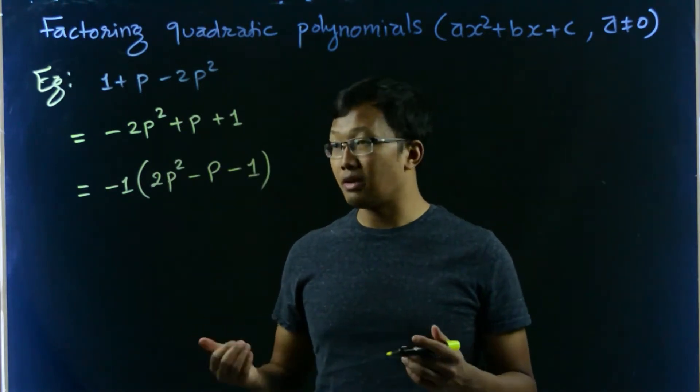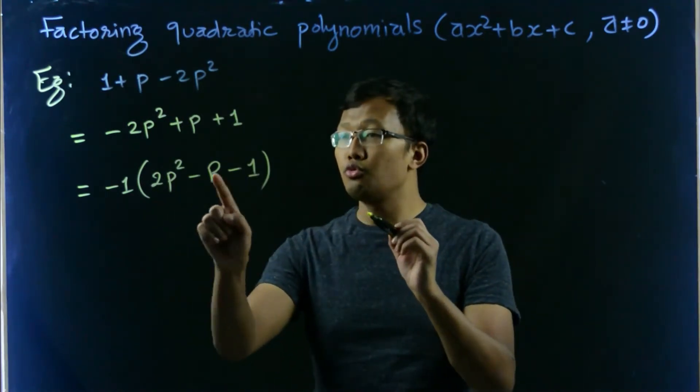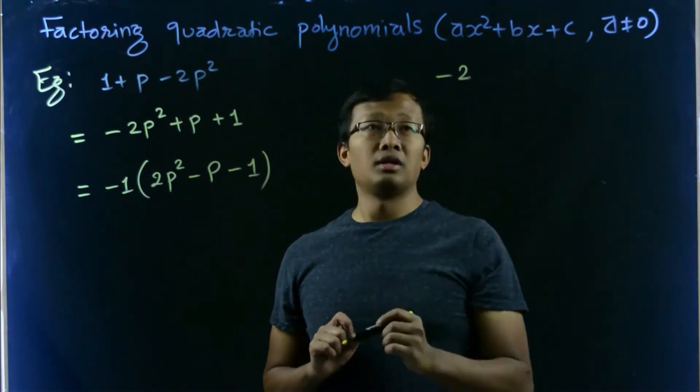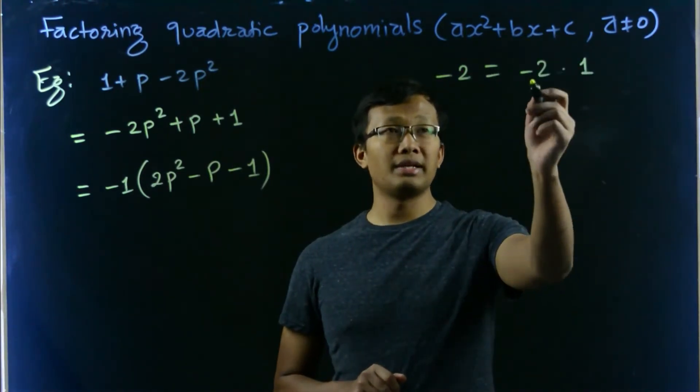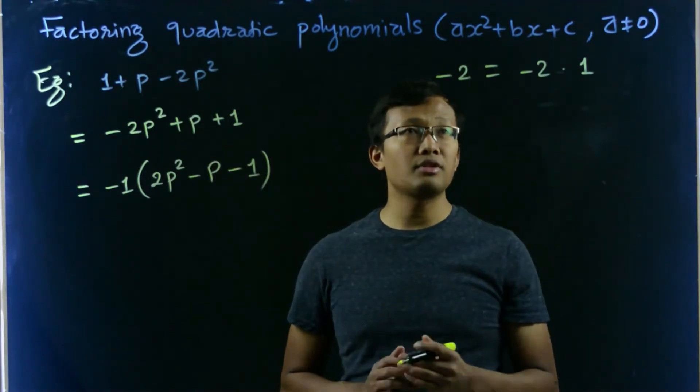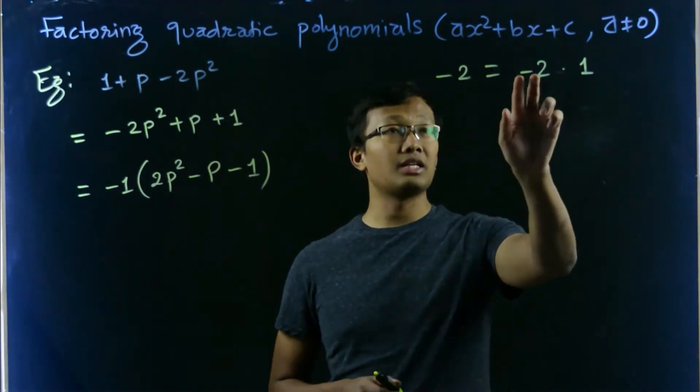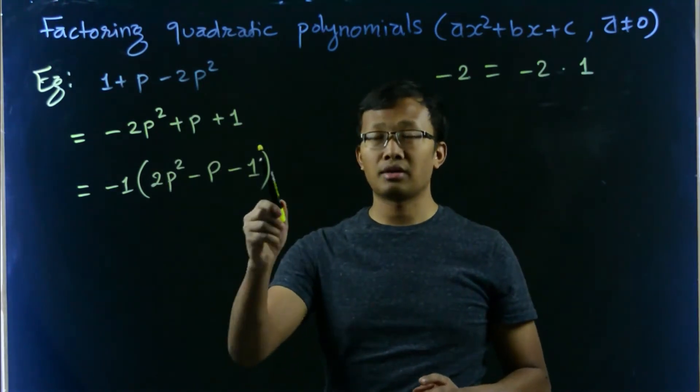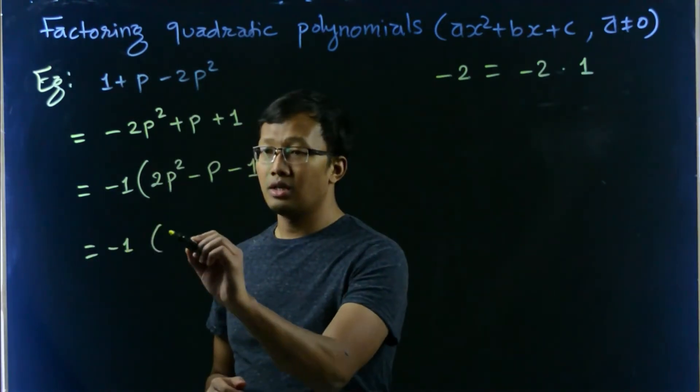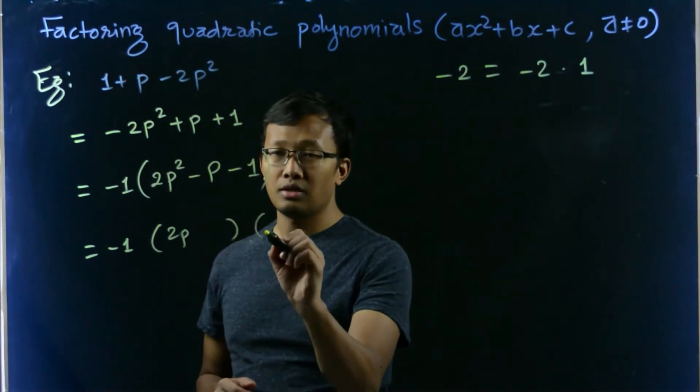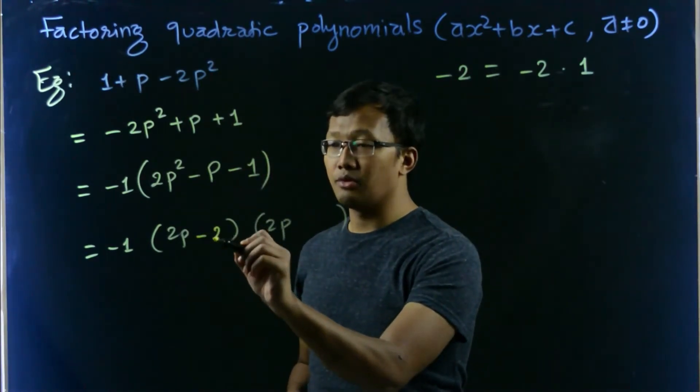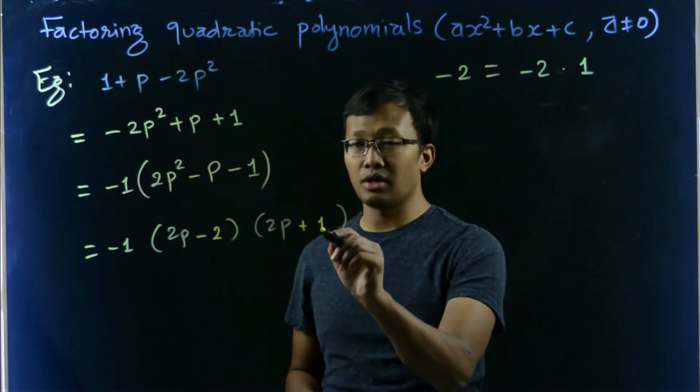Now let's factorize it. So 2 minus negative 1 is negative 2. Let's write negative 2 as negative 2 times 1. After doing this, then we can clearly see that negative 2 plus 1 is negative 1. So, 2p, 2p. We would go for negative 2. Let's write negative 2 in here, and 1 is there, so that's positive 1.